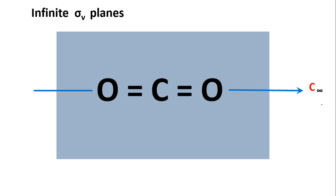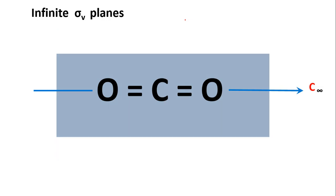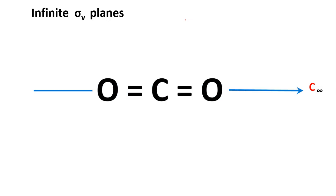A plane of symmetry containing the principal axis C∞ is a sigma V plane. There are infinite sigma V planes in CO2, because the sigma V planes cut through each atom — one portion of each atom is above the plane and one portion is below. Since the atoms are spherical, there are infinitely many planes containing C∞, all of which are sigma V planes.